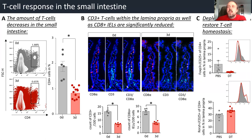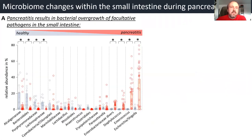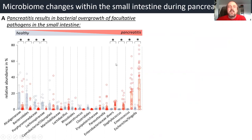Last but not least, if we deplete regulatory T-cells, we can restore the T-cell homeostasis within the small intestine. Therefore, we think regulatory T-cells are mainly involved in the infection of necrosis. In the next step, we looked for bacteria within the small intestine. Comparing healthy animals to pancreatitis animals, we see a significant change of the microbiome within the small intestine and an emergence of facultative pathogens during acute pancreatitis.